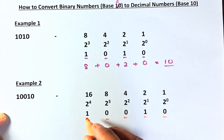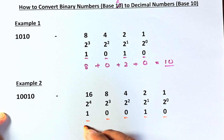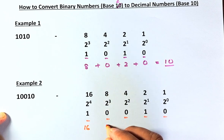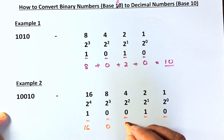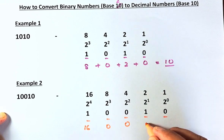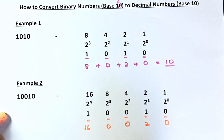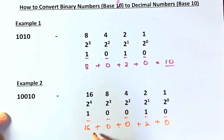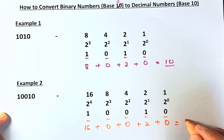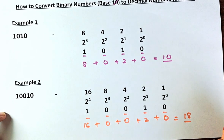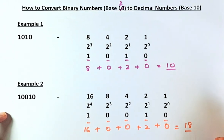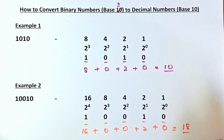Now we are going to multiply: 1 times 16 is 16, 0 times 8 is 0, 0 times 4 is 0, 1 times 2 is 2, and 0 times 1 is 0. Last but not least, we are going to add all the numbers: 16 plus 0 plus 0 plus 2 — so 16 plus 2 — the answer is going to be 18. So 10010 is equal to 18 as the normal number.